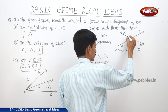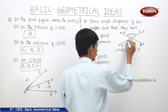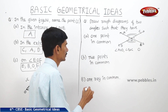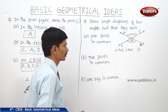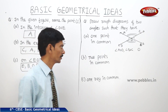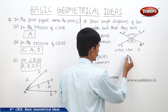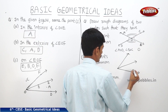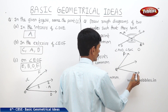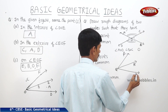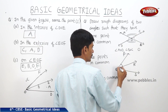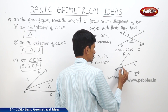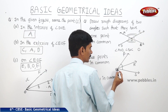We can also write two angles which have only one point in common as angle AOC and angle DOB. Now we should draw two angles such that they have two points in common. We can draw angle PQR and angle RQS. These two angles have two points in common: Q and R.